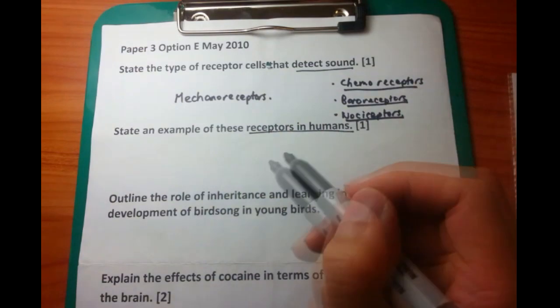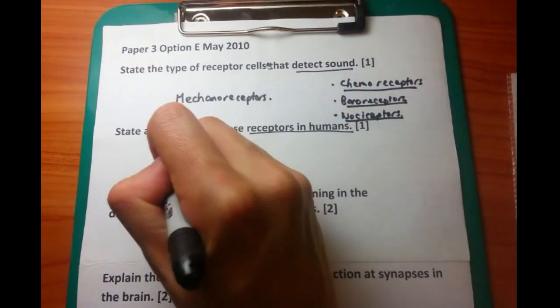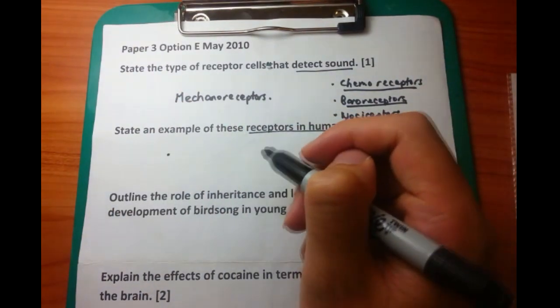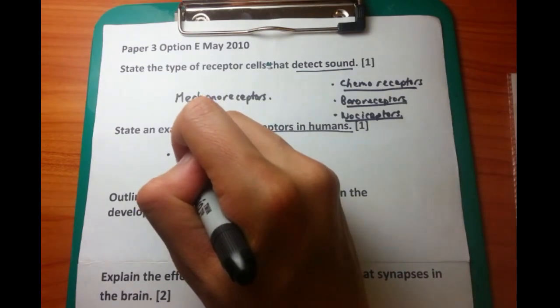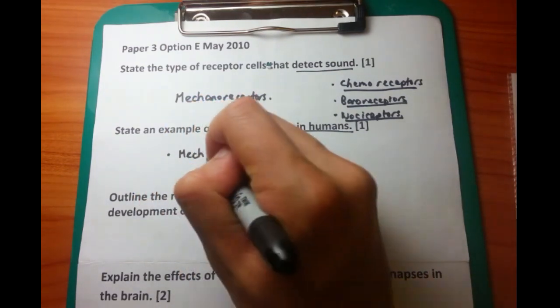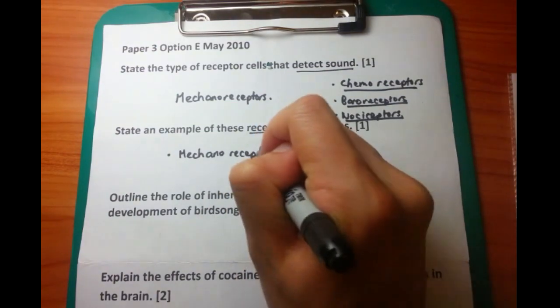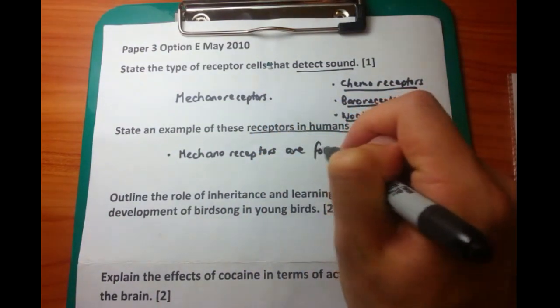Now the second question. State an example of these receptors in humans. Mechanoreceptors are found in the human cochlea, because the cochlea is what detects sound in the human ear. Once again, relatively straightforward, just for one mark.